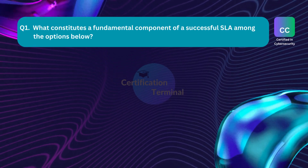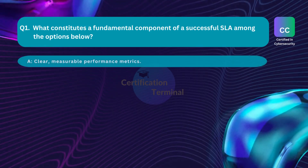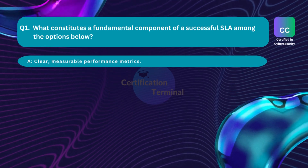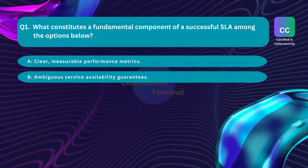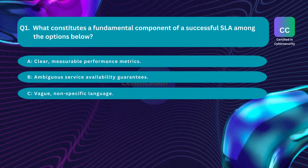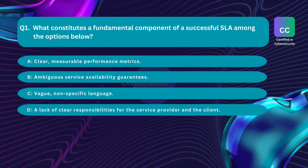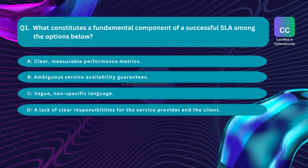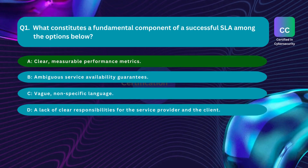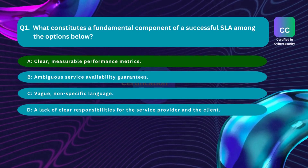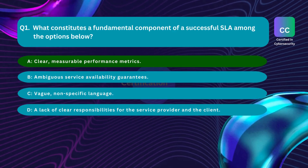Question number one: What constitutes a fundamental component of a successful SLA? Option A: clear measurable performance metrics. Option B: ambiguous service availability guarantees. Option C: vague non-specific language. Option D: a lack of clear responsibilities for the service provider and the client. The correct answer is Option A — clear measurable performance metrics.